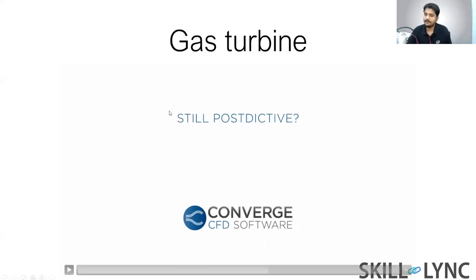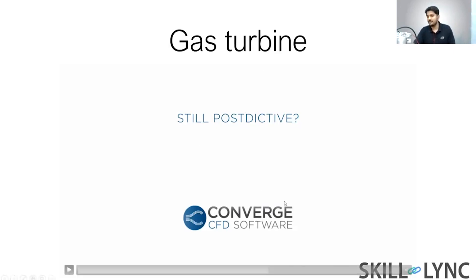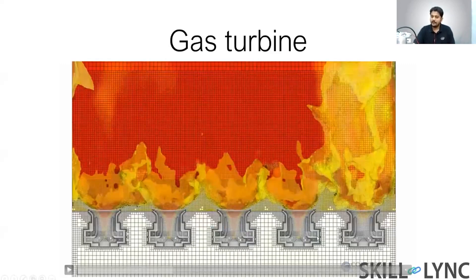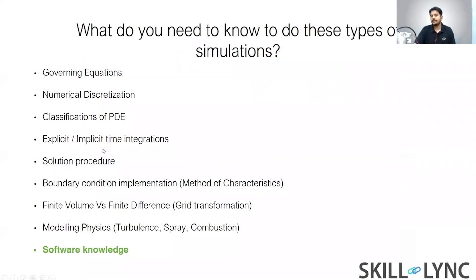This type of simulation is very useful for companies that make gas turbines — they can predict how uniform the temperature distribution is and the order in which the burners fire. All of this is done using CFD, simulating both flow and combustion. The software I'm using is Converge CFD, which is much better than tools like ANSYS Fluent for complex geometries and complex flow.